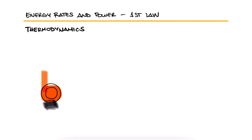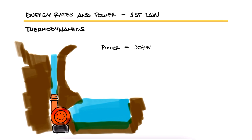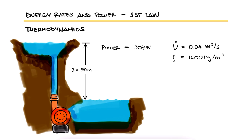An electric pump that provides 30 kilowatts of shaft power is used to pump water from a lake to a higher reservoir. The free surface of the upper reservoir is 50 meters higher than that of the lake. If the flow rate of the water is 0.04 cubic meters per second, what is the mechanical power that is lost through thermal energy due to frictional effects?